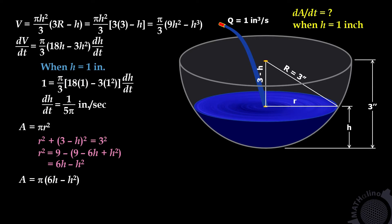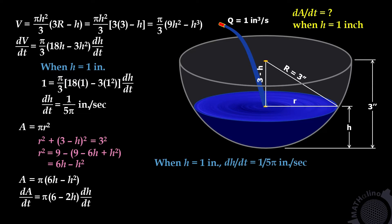Now we differentiate both sides with respect to time. This is the required: dA/dt equals pi times (6 minus 2h) times dH/dt. When h equals 1 inch, we already have dH/dt equals 1 over 5pi. Substituting: dA/dt equals pi times (6 minus 2×1) times (1 over 5pi). The answer is 0.8 square inches per second.